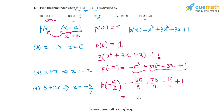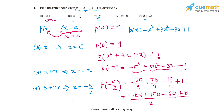Taking LCM of 8: -125 + 150 - 60 + 8 = -27. So p(-5/2) = -27/8. Therefore, when p(x) is divided by (5 + 2x), the remainder is -27/8. That finishes the first question.